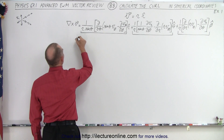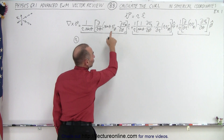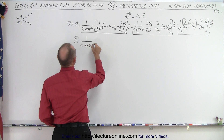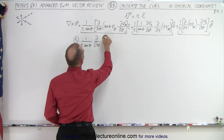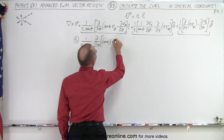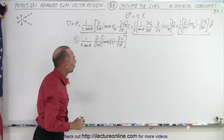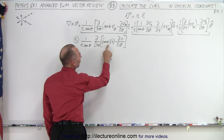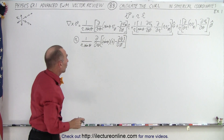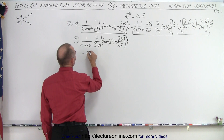Let's do the R part first. We're going to take the sine of Theta times the V-Phi component, which is zero. So we end up with 1 over R times the sine of Theta times the partial derivative with respect to Phi of the sine of Theta times the Phi component of V — which is zero — minus the partial derivative with respect to Phi of the Theta component, which is zero. So we take the partial derivative with respect to Theta of zero, minus the partial derivative with respect to Phi of zero, and therefore that is equal to zero in the R direction.